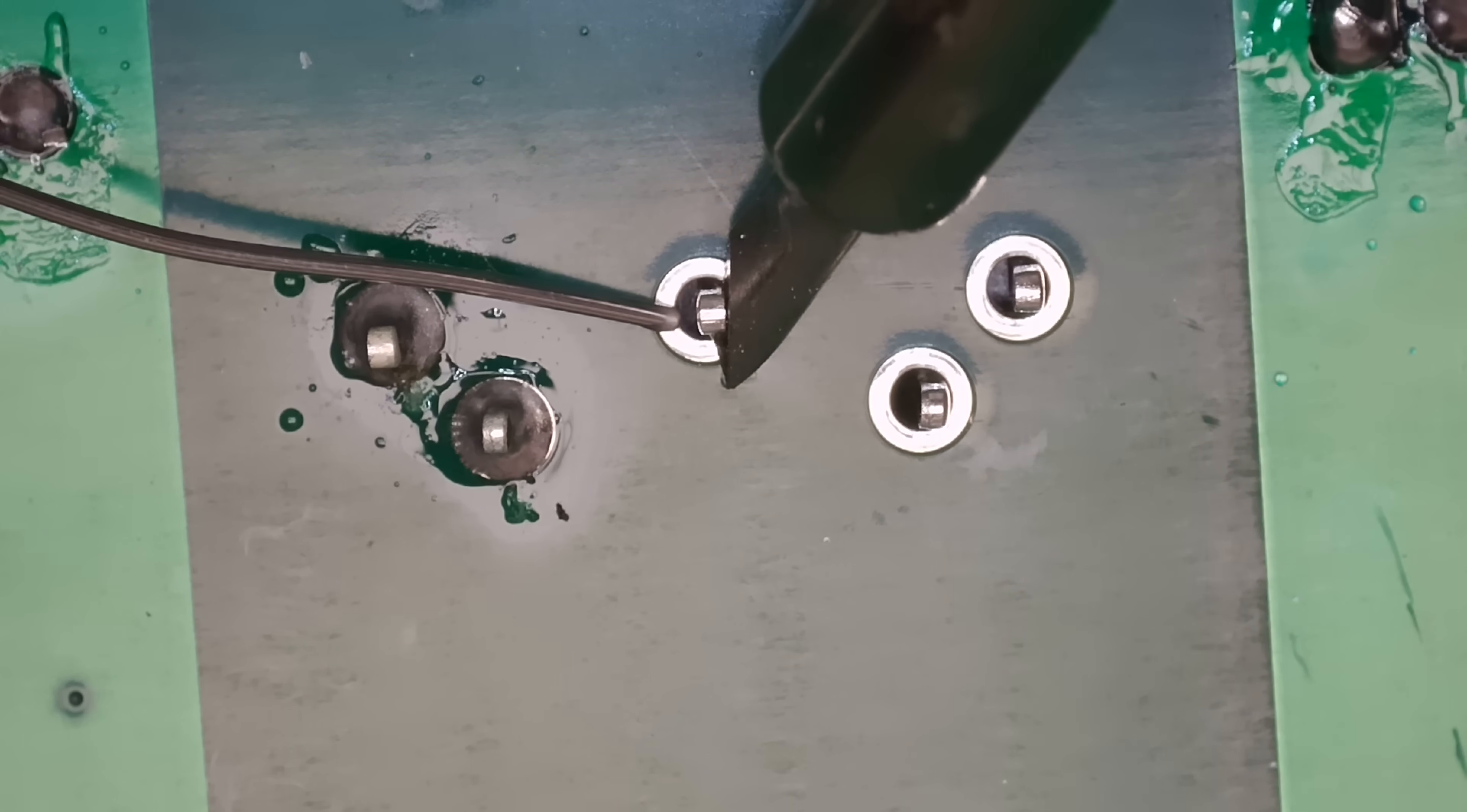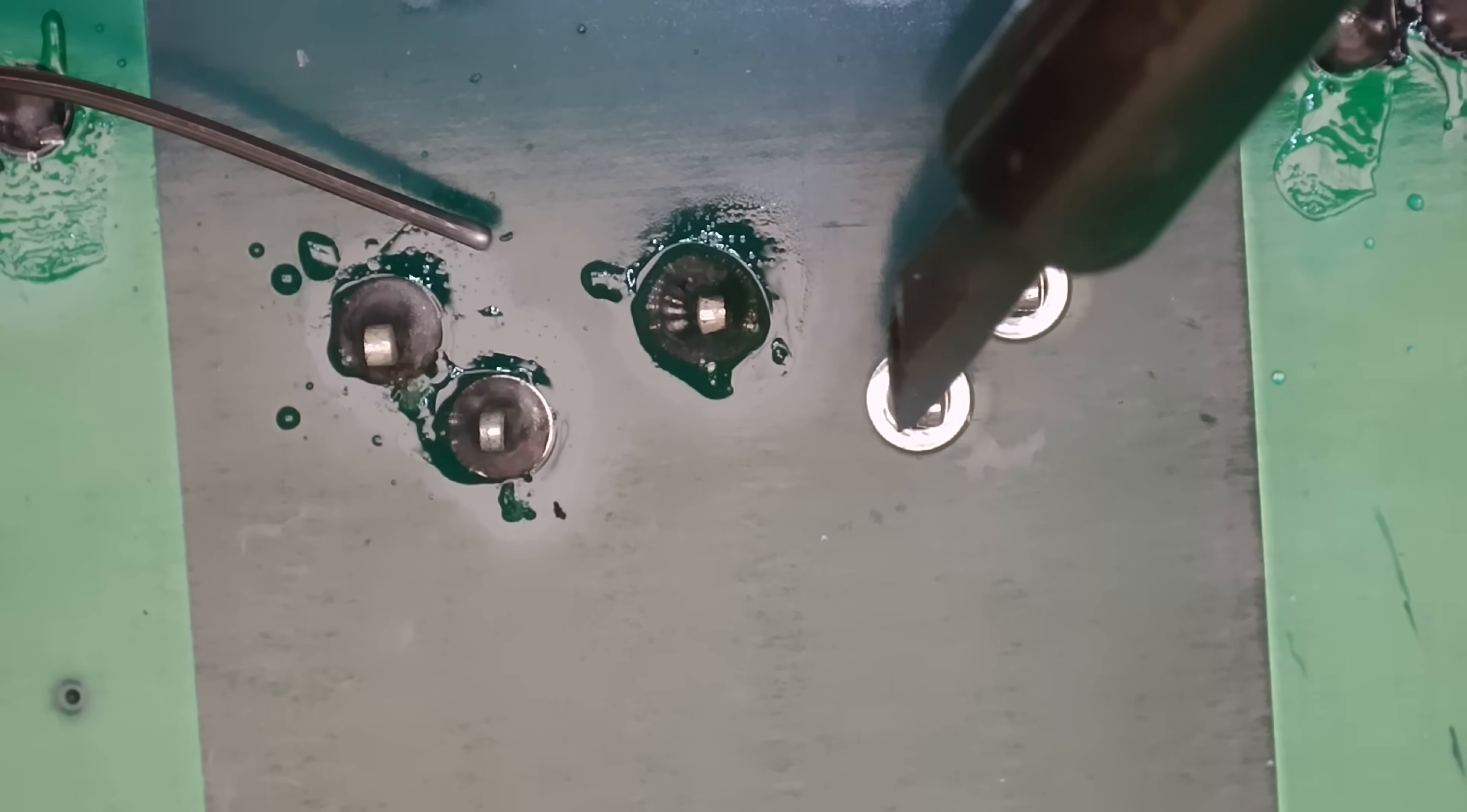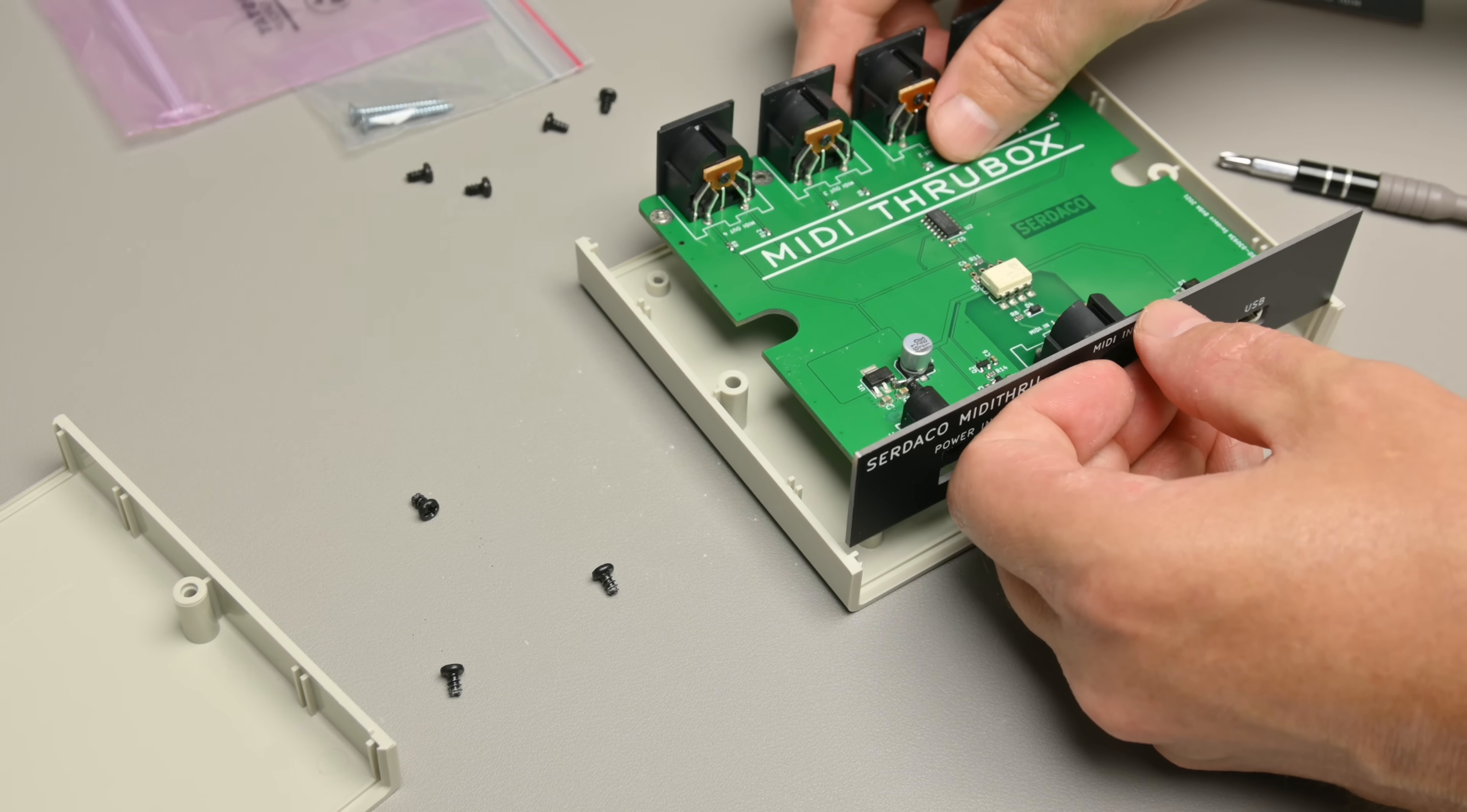So the soldering went quite well. I haven't soldered in quite a while so the first solder joints they were a little bit shaky, but after that it was pretty much smooth sailing and here you can see me assemble the MIDI through box after the soldering.